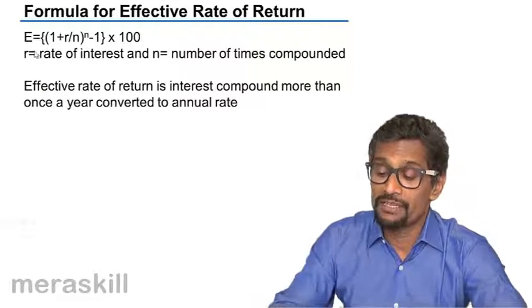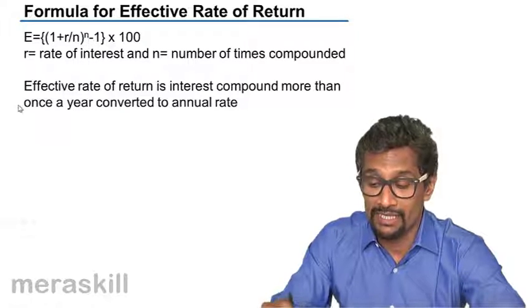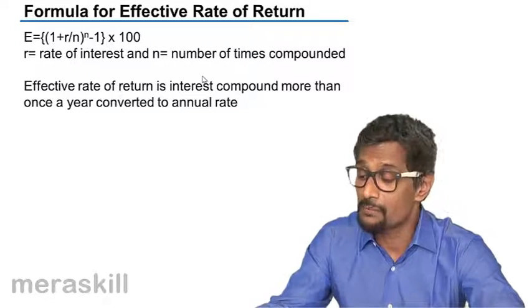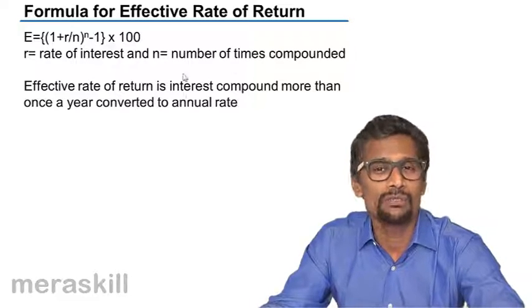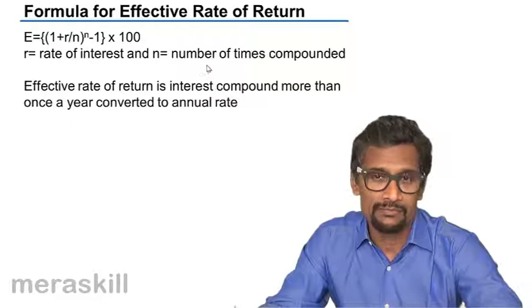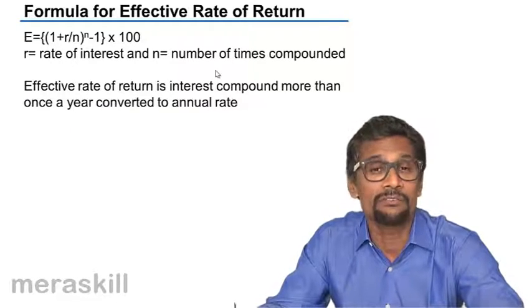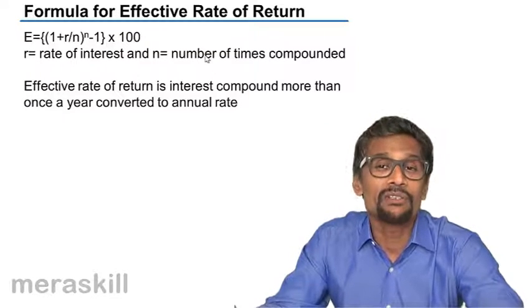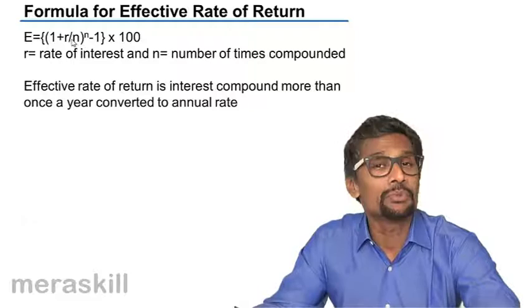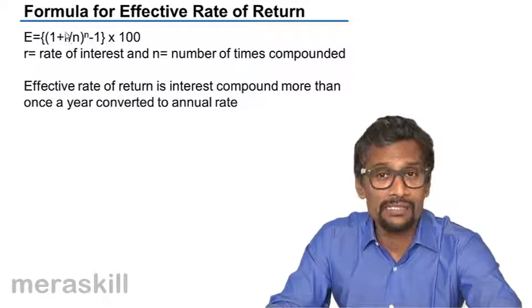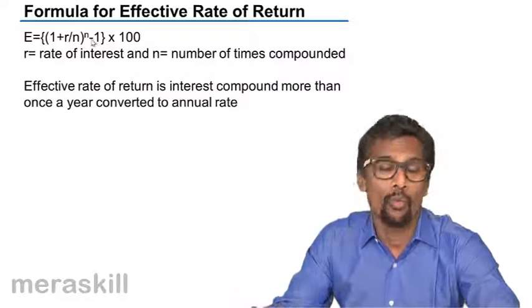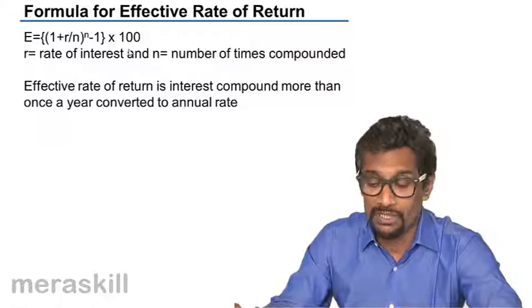So the general formula for effective rate of return is 1 plus R by N raised to N minus 1 into 100, which you'll get as percent. Effective rate of return as said is interest compounded more than once a year converted to annual rate. So the net effective rate was 18.81 percent. But the nominal rate was only 18.5 percent, which is different. So it's eventually 1 plus R by N raised to N minus 1 into 100, where R is the annual rate of interest upon the number of times it is compounded raised to the number of times it is compounded in a year minus 1.